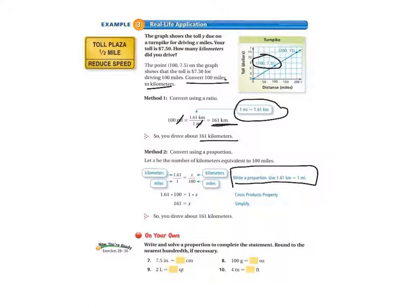That's equal to X/100. So we wrote our proportion using 1.61 kilometers is about equal to 1 mile. Then we just multiply 1.61 times 100 equals 1 times X. So we were cross-multiplying. When we solve that, it comes out to 161 equals X. So you can use either one of these methods to solve.